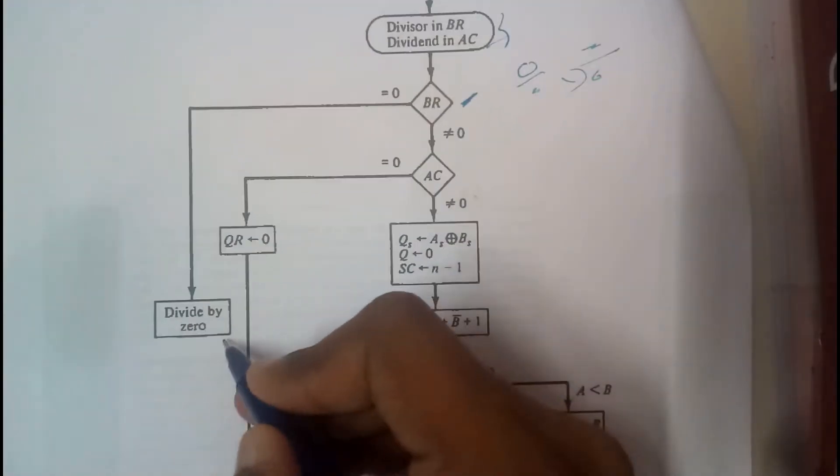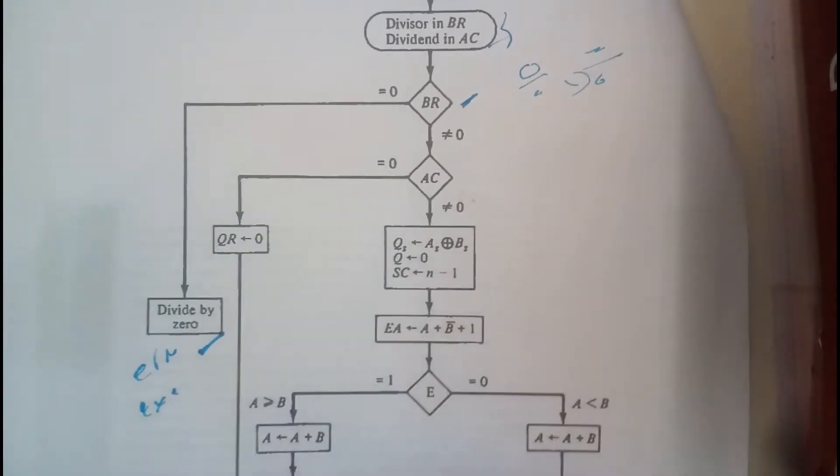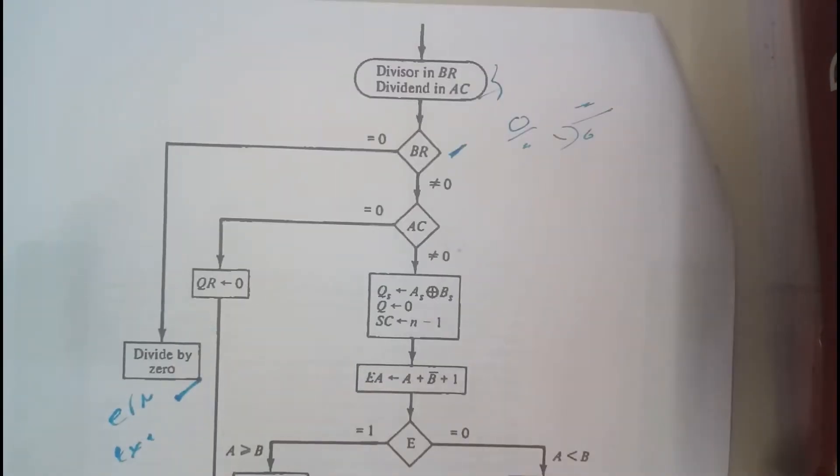If BR equals zero, we will be showing that divide by zero. It is an error or exception - in some languages they call it error and in some languages they call it exception.